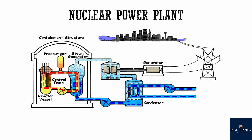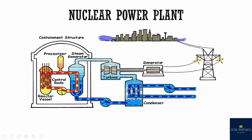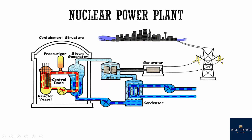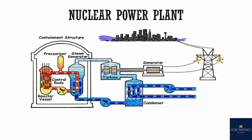The energy released in the form of heat is absorbed by a coolant, which then passes through the coils of a heat exchanger containing water. The water in the heat exchanger gets heated and is converted to steam. The steam then has energy and is used to rotate the turbine. As the turbine rotates, it rotates the generator — or the armature of the generator — in a magnetic field, and thus electricity is produced.